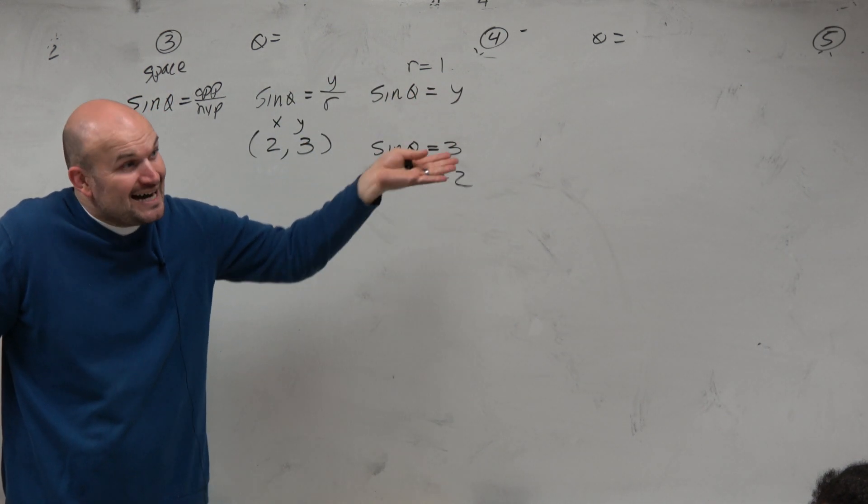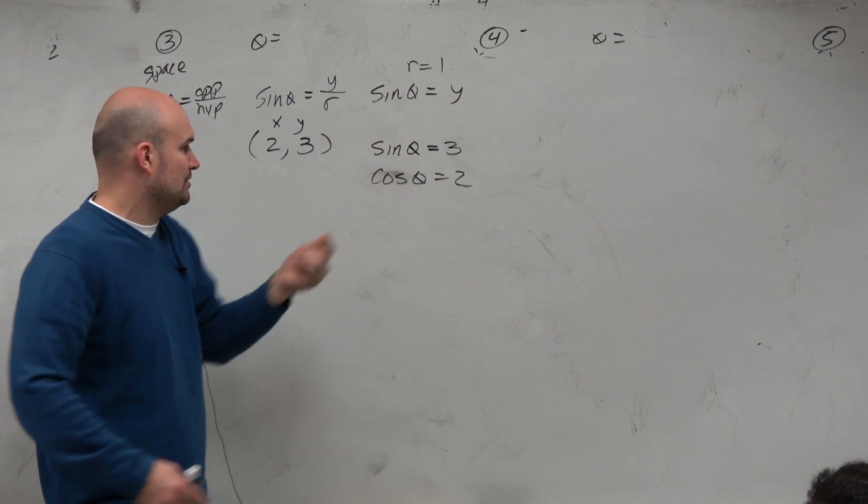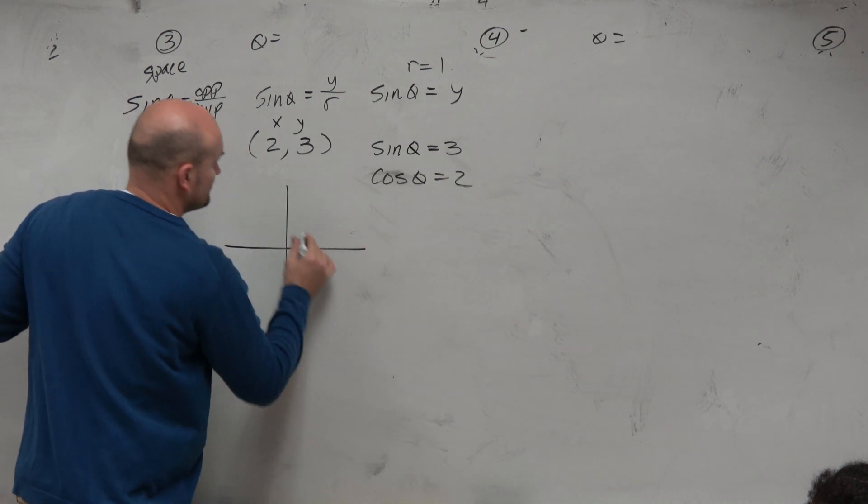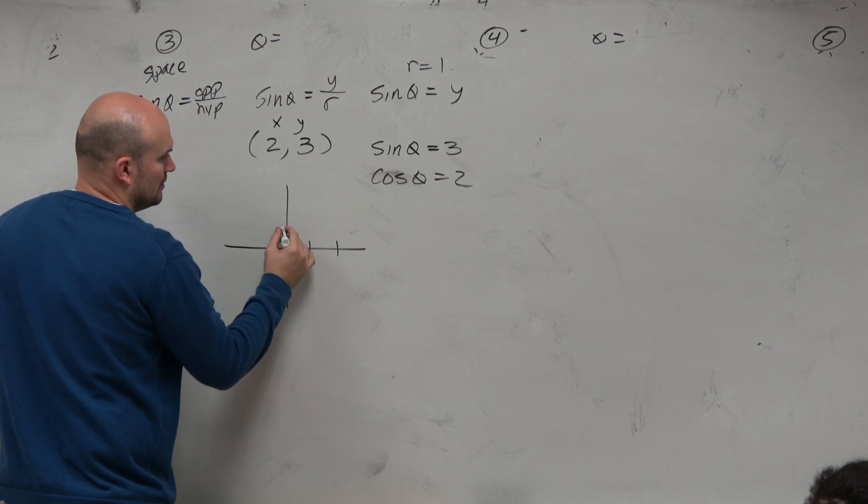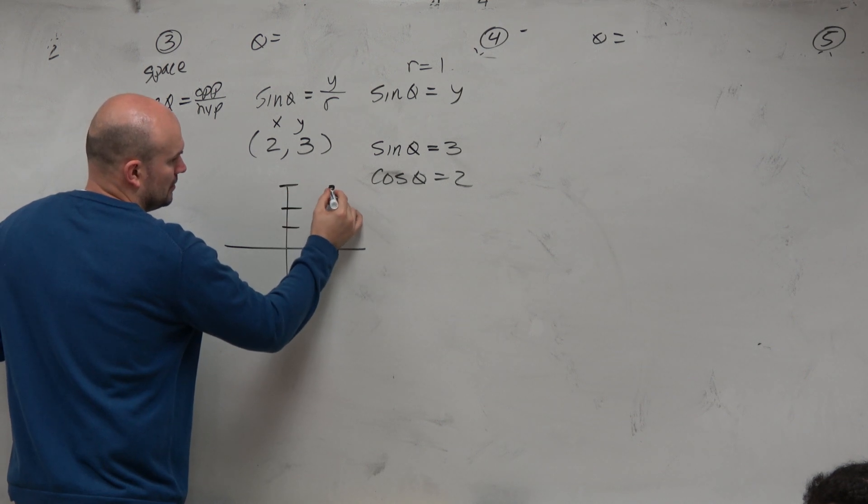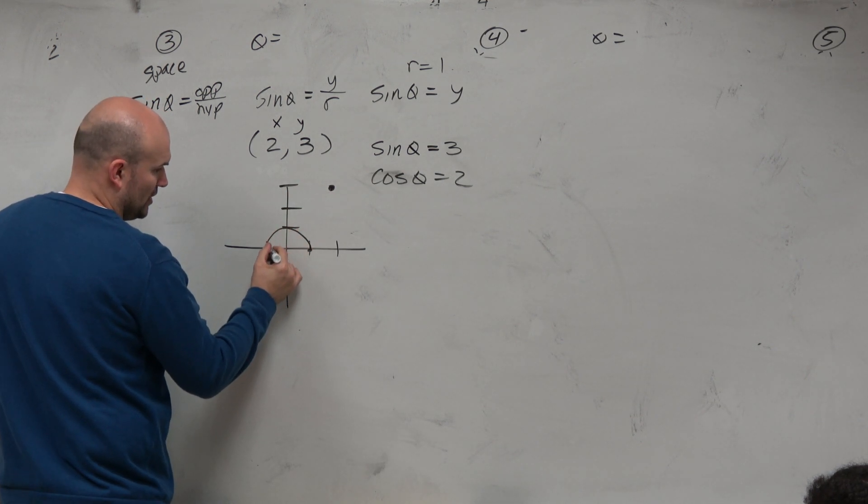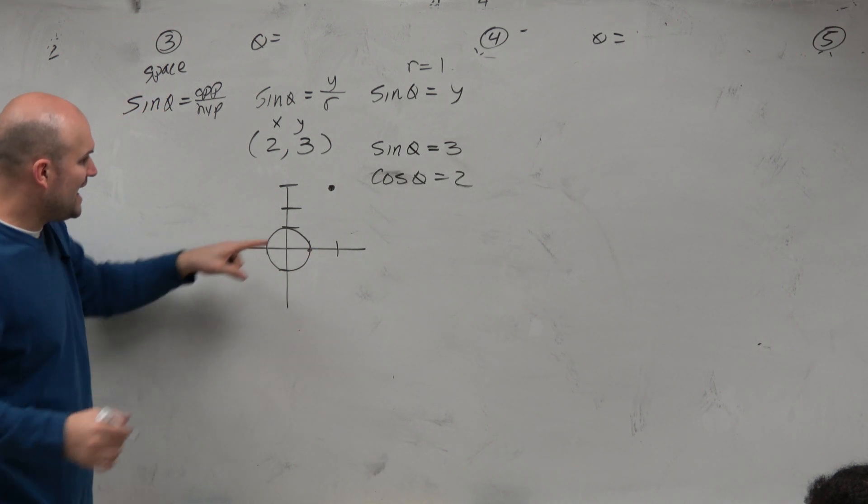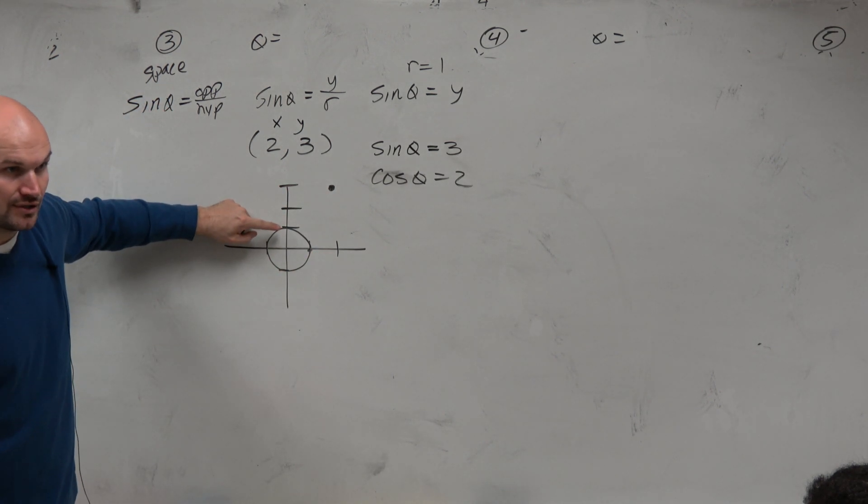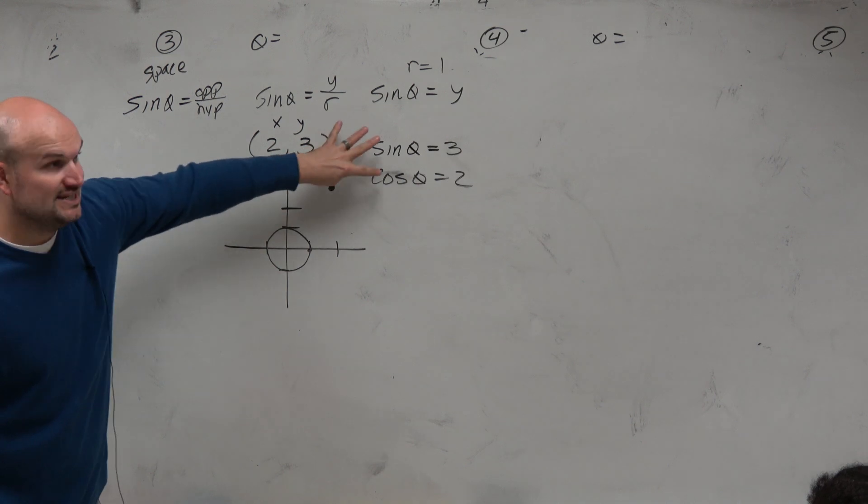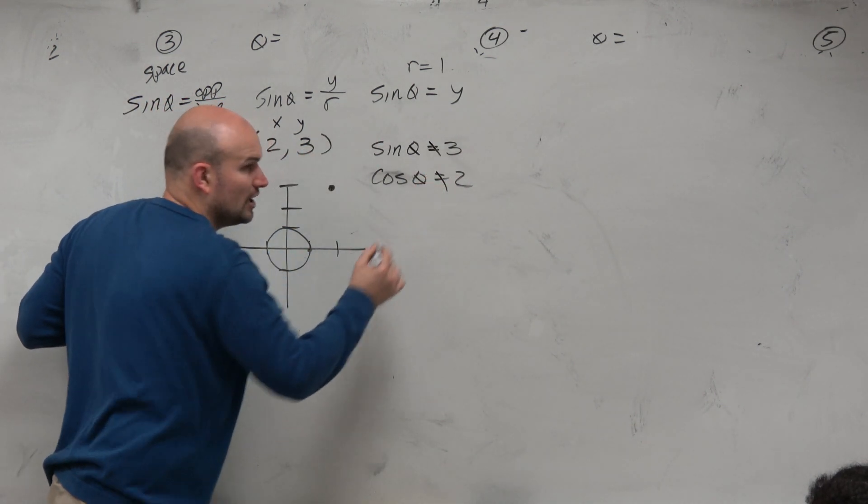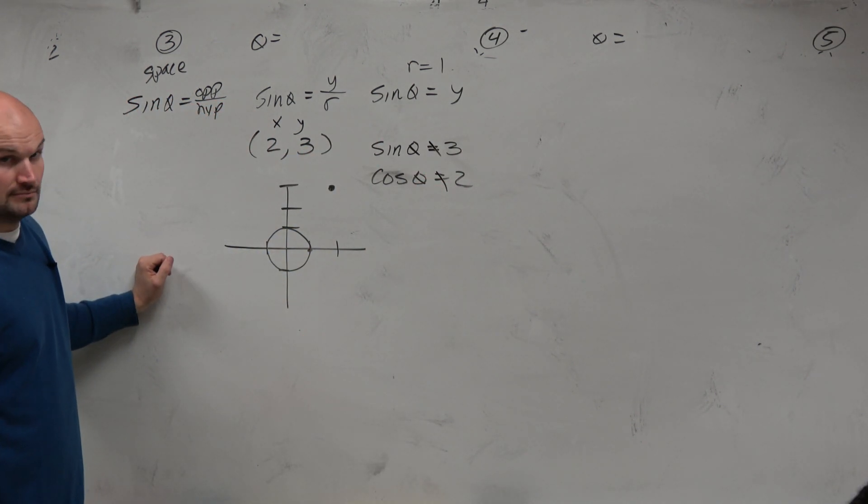So let's go ahead and sketch the graph 2, 3. Now let's sketch a graph of a unit circle, a circle with a radius of 1. It's pretty obvious this point is not on the unit circle. So these definitions are incorrect. Agree?